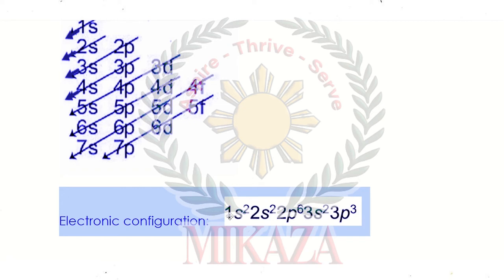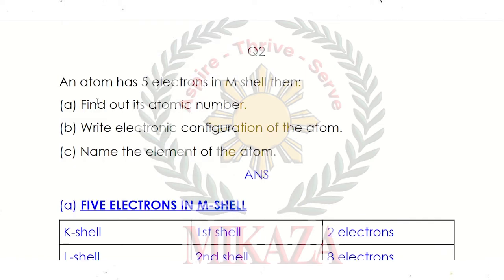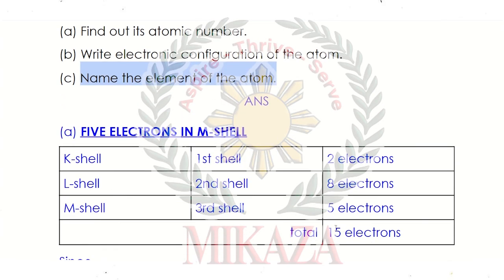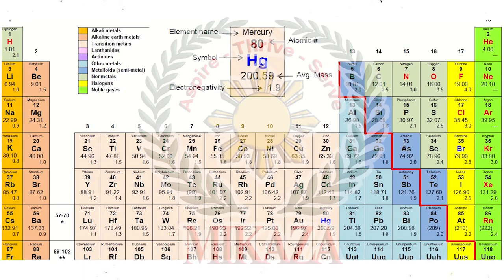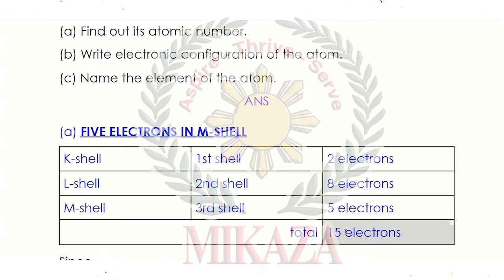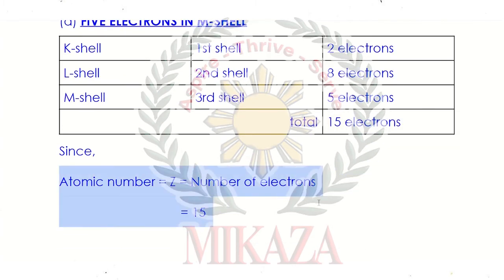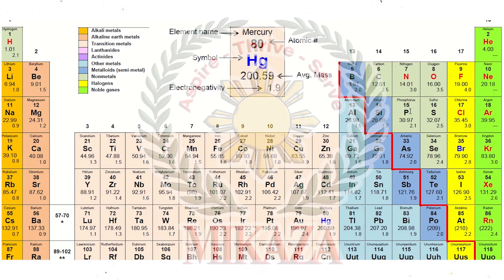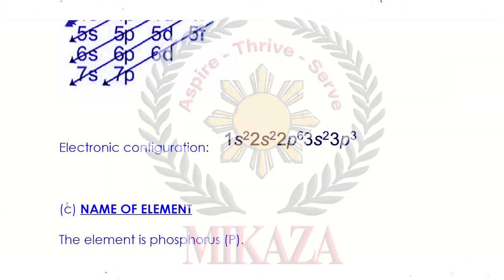We draw the structure showing 15 electrons distributed across the shells. Because the atomic number equals the number of electrons, which is 15, we can identify this element from the periodic table. The element with atomic number 15 is Phosphorus. So the element found is Phosphorus and its symbol is P.